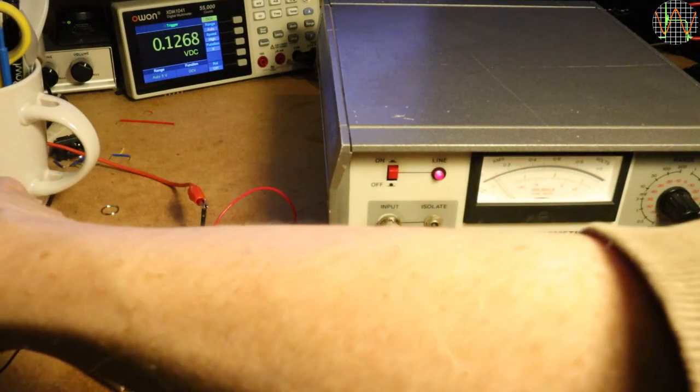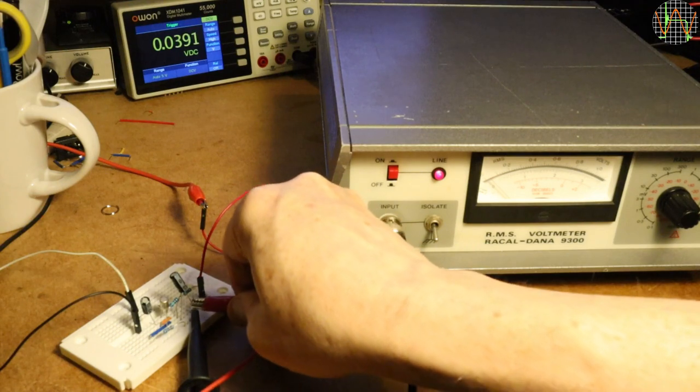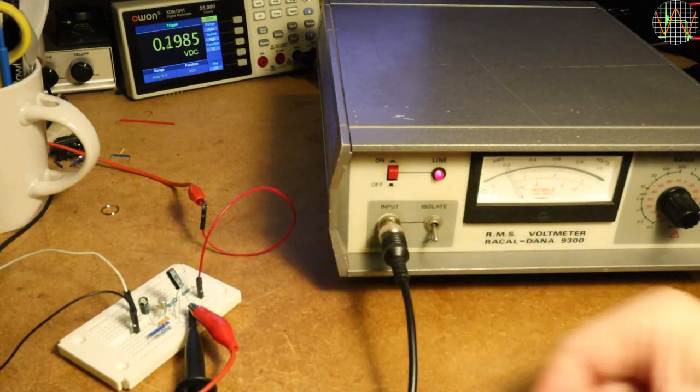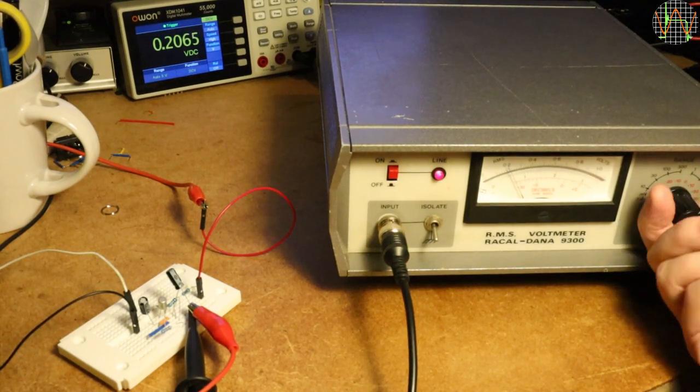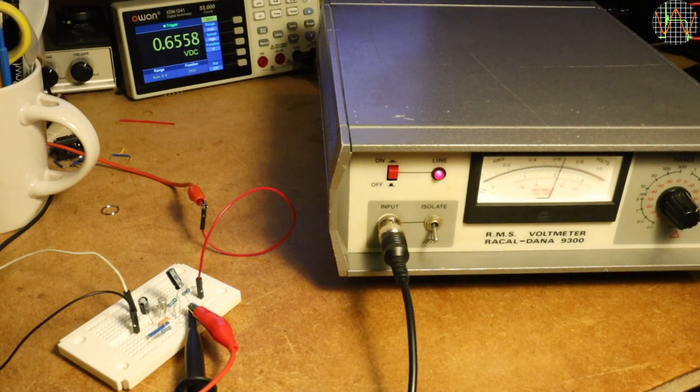Before connecting the meter to the output, we need to select a less sensitive range. This meter has no auto-ranging, so it is the operator's responsibility to think ahead. Once the signal is connected, I can again lower the range to get a good reading. This is the 1V setting, so the output signal as shown on the OwOn is 0.655 mV RMS. It follows that this little breadboard amplifies 10 mV about 65 times to 650 mV RMS.